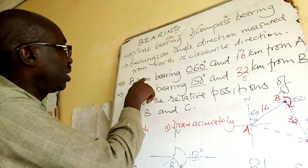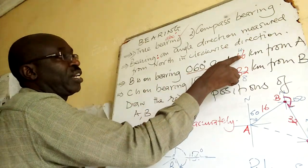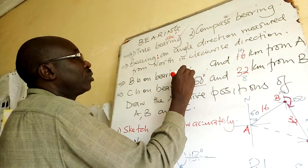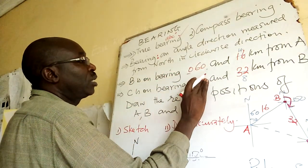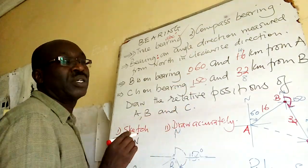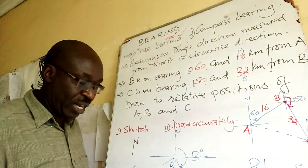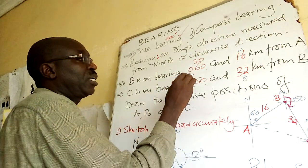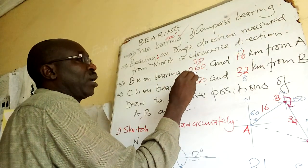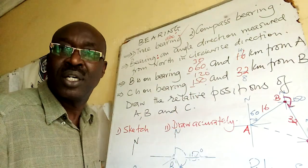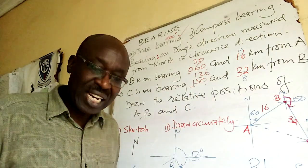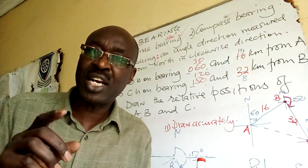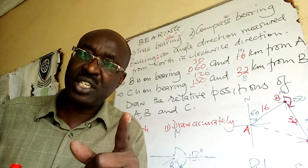Just get this. Keep on changing the ruler and set square. Those are the only things you change. Here 060. Here 150. So you can have another one. Another trial. You can put here 30. And then here you put maybe 120. Then try and see how you hold your ruler and set square.